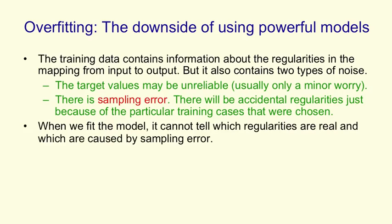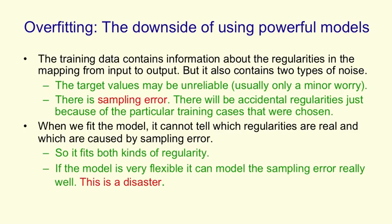Now when we fit a model, there's no way it can tell the difference between an accidental regularity that's just there because of the particular samples we chose and a real regularity that will generalize properly to new cases. So what the model will do is it'll fit both kinds of regularity. And if you've got a big powerful model, it'll be very good at fitting the sampling error. And that'll be a real disaster. That'll cause it to generalize really badly.